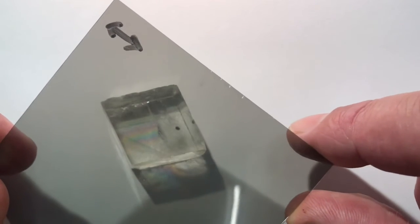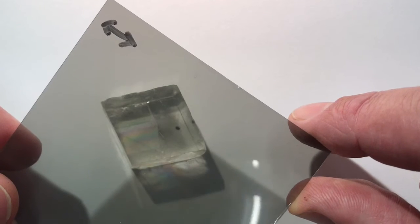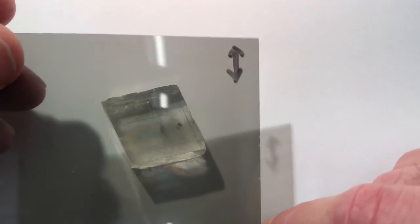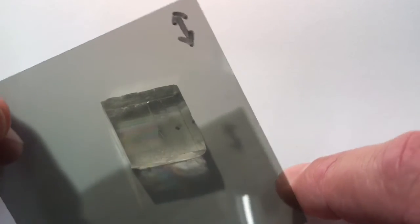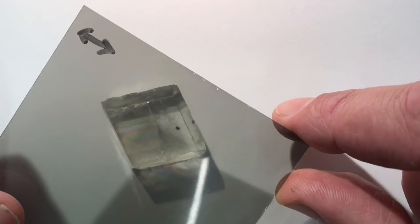Basically the material has a different index of refraction depending on the polarization of the waves. So in one direction it has one index, the other direction has another index.